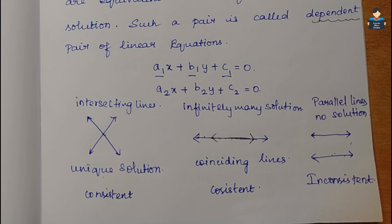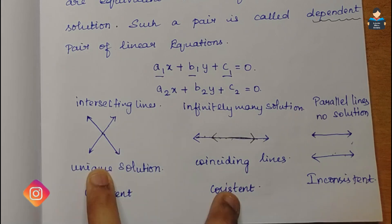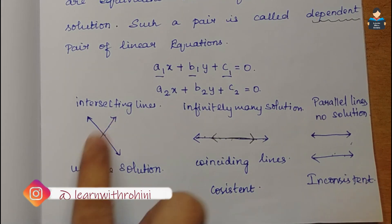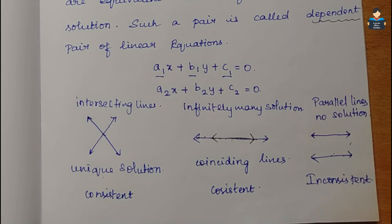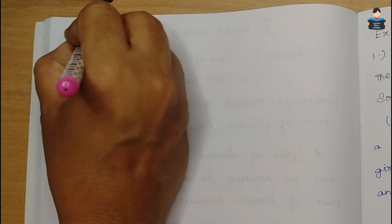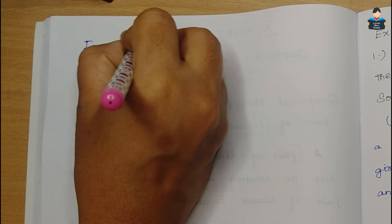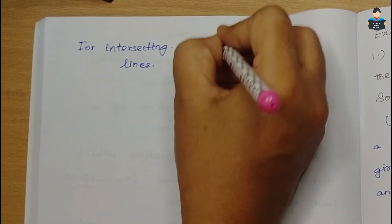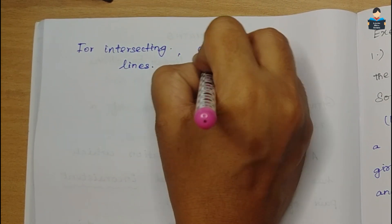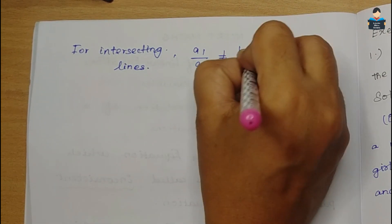Now we have the conditions for the three types of lines - intersecting, coinciding, and parallel. The condition for intersecting lines is: a1/a2 is not equal to b1/b2.